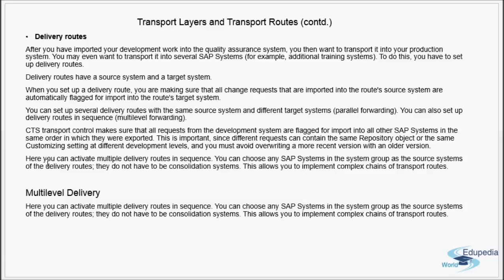In the delivery route, you can activate multiple delivery routes in sequence. You can choose any SAP systems in the system group as the source system of delivery routes — they do not have to be the consolidation systems. This allows you to implement complex chains of transport routes. From one system you can forward it to any number of systems, with multiple delivery routes in sequence. From production, it can go into the demo box, training box, sandbox, or whatever it is.